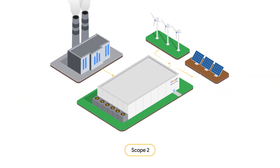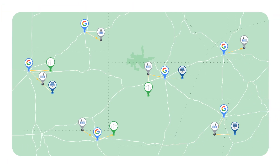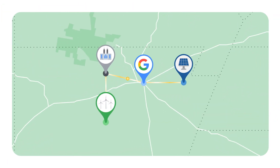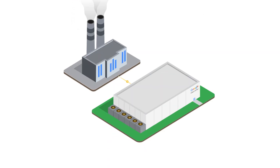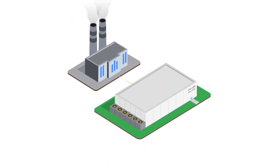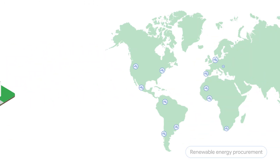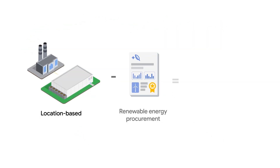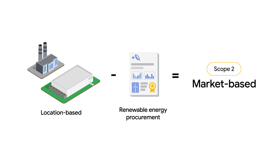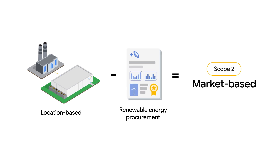In Scope 2, there are two methods for calculating emissions. Our carbon footprint products start with location-based. Location-based emissions represent the emissions released by the sources powering the electric grid where consumption occurs, reflecting the actual emissions released to the atmosphere as a result of our data centers' electricity consumption. Market-based emissions, on the other hand, represent the combination of emissions associated with grid electricity consumed by a company, as well as any renewable energy certificates a company purchases. In other words, market-based reflects the emissions that a company is responsible for after its clean energy purchasing activities.